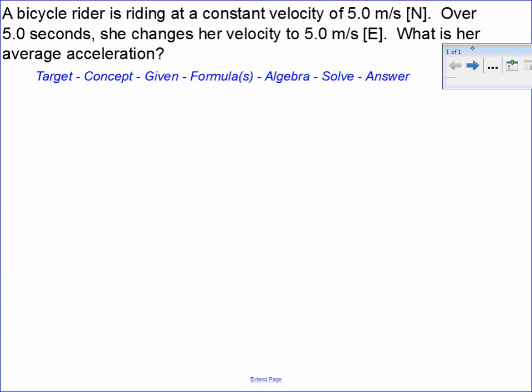The question here is we have a bike rider who's going 5 meters per second north, and in 5 seconds she changes that velocity to 5 meters per second east. We're trying to find her average acceleration for that period of time.